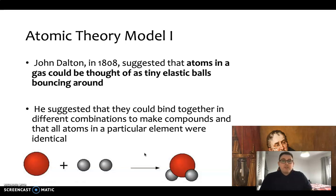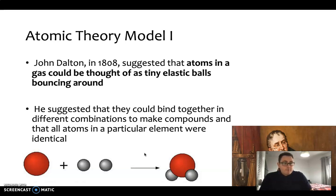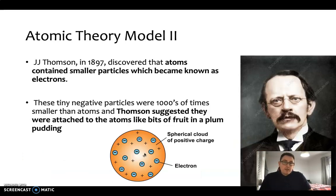Dalton also suggested that when we make compounds, we combine different combinations of elements together. That was one of the earliest models of the atom. Then JJ Thomson came around in 1897.